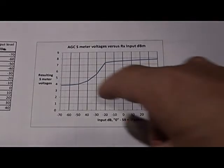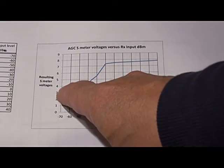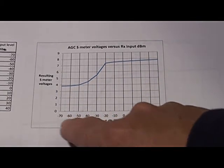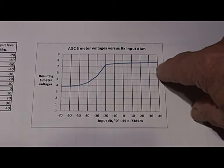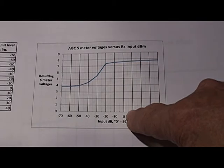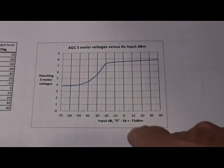So here we've plotted the values we've measured on a graph for minus 70 dB up to S9 plus 40. 0 dB actually represents S9 which is minus 73 dBm.